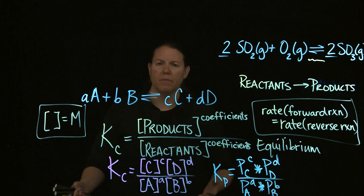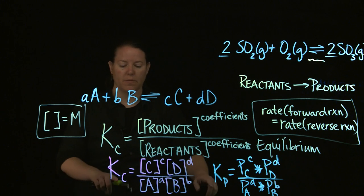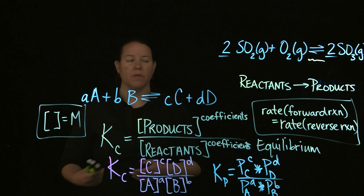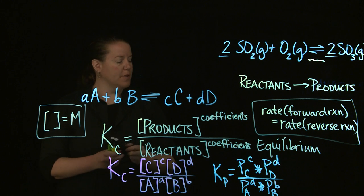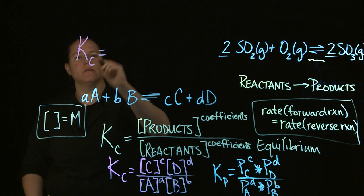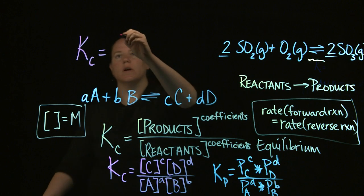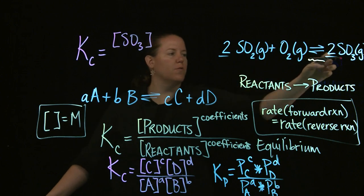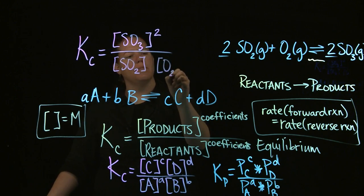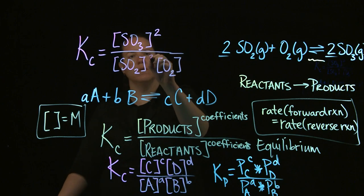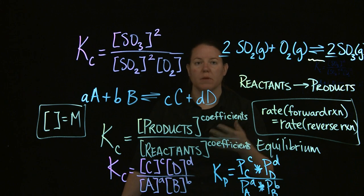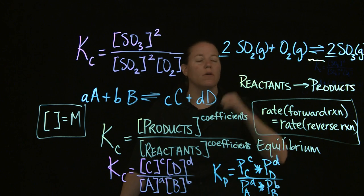There's a relationship between Kc and Kp given by an equation — we'll talk about that in a separate video — but you can totally relate these two if you need to. You're going to be writing out a lot of equilibrium constants and then calculating things based off of those. For this particular equation — sulfur dioxide reacting with oxygen to form sulfur trioxide — Kc would be the concentration of SO3 to the power of 2, over the concentration of SO2 to the power of 2 times the concentration of O2 to the power of 1, so I don't have to write anything for O2.